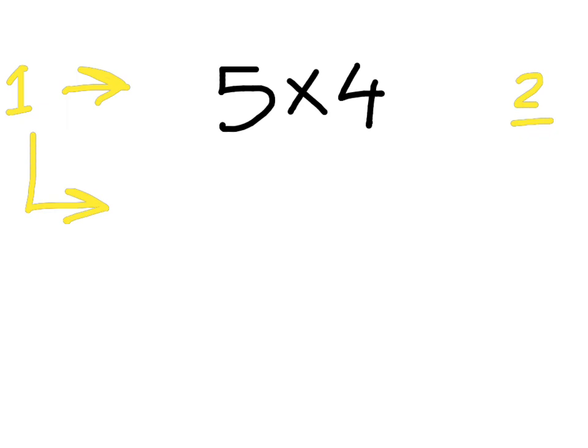It's time for you to do one by yourself now. It will be 5 times 47. Remember step 1 is to compensate and solve. Step 2 is to work out the difference. And step 3 is to take back what you've given. Press pause and do that now.